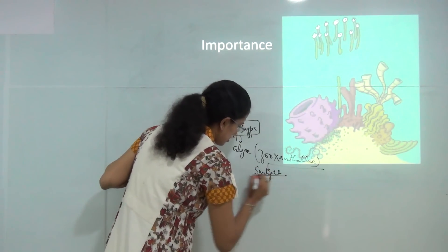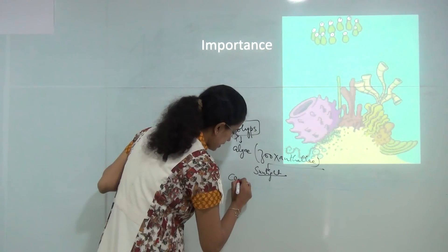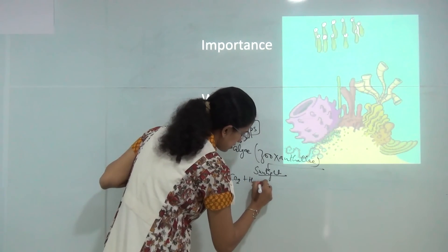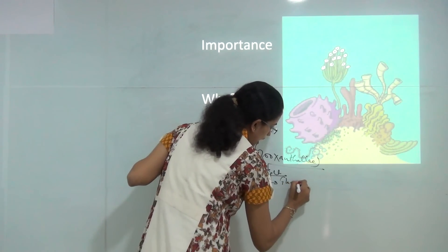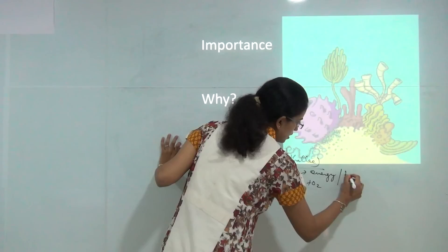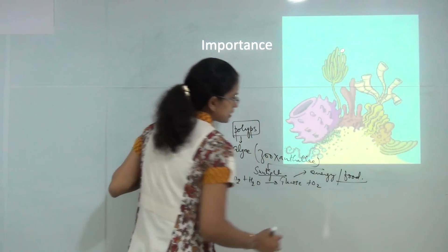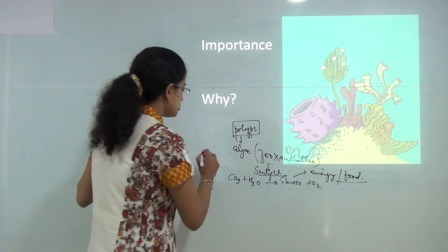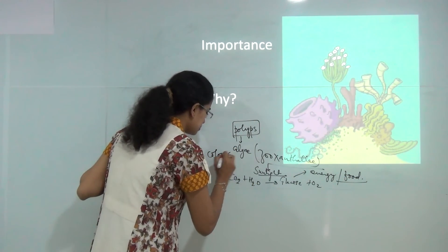This zooxanthellae in presence of light and sunlight converts carbon dioxide and water into glucose and oxygen and provides energy or food to the corals. Besides providing food it also provides color to the polyp.